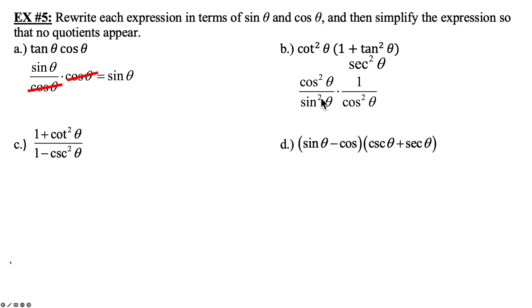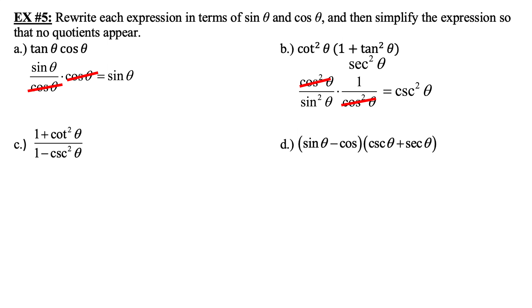For part B, when I see squares on trig functions, I think Pythagorean identity. Recognizing 1 plus tangent squared theta as secant squared theta, convert cotangent squared to cosine squared over sine squared, then multiply by 1 over cosine squared theta. The cosine squareds cancel, leaving 1 over sine squared theta, which is cosecant squared theta.